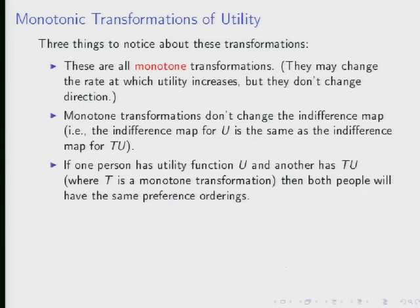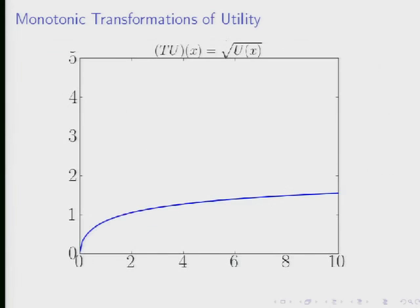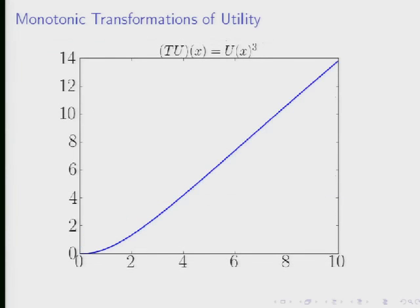Here's a final thing. This is related to our earlier discussion about interpersonal utility comparisons. If one person has the utility function that looks like this, and another person has the utility function that looks like this, they still have the same indifference map. They're going to have the same indifference curves, the same marginal rate of substitution. There's going to be no way to determine from their demand behavior, their response, their reaction to prices and the way they behave, whether they've got this utility function or this utility function.